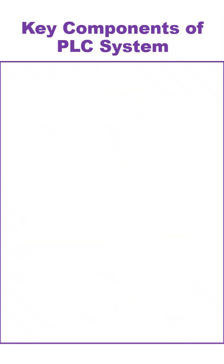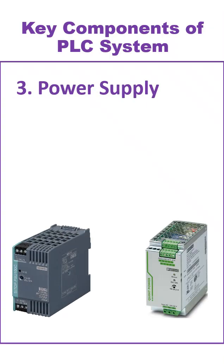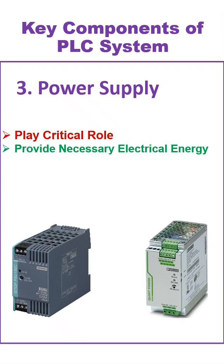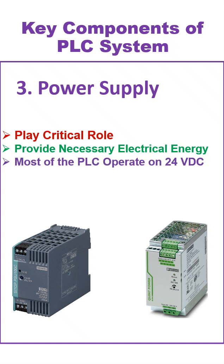The power supply in a PLC system plays a critical role in ensuring the reliable operation of the entire system. It provides the necessary electrical energy to the PLC CPU, I/O Modules, Communication Modules, and other connected peripherals. Most PLCs operate on 24V DC. The power supply unit converts AC power to the required level of DC power.